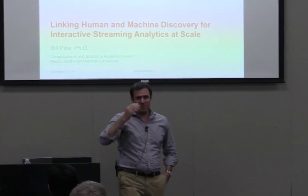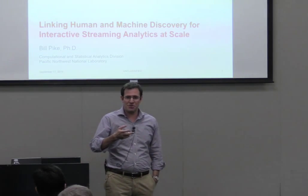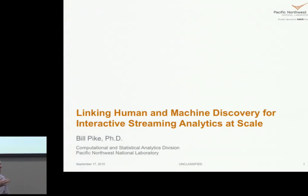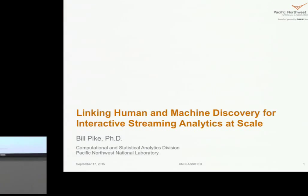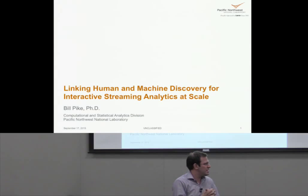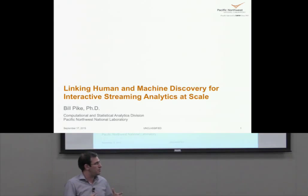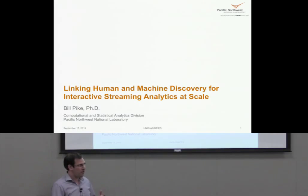Thanks, Alex, and thank you all for having me. I'm really excited to be here and share with you some of the work that we're doing. We've had a long history of collaboration with folks at Georgia Tech for a decade plus. I lead a computing division at PNNL. PNNL is one of 17 national laboratories in the U.S. — basically the federal government's advanced R&D arm. When the government has big, hard scientific problems, power grid problems, security problems, they come to a national lab like ours for help solving them.